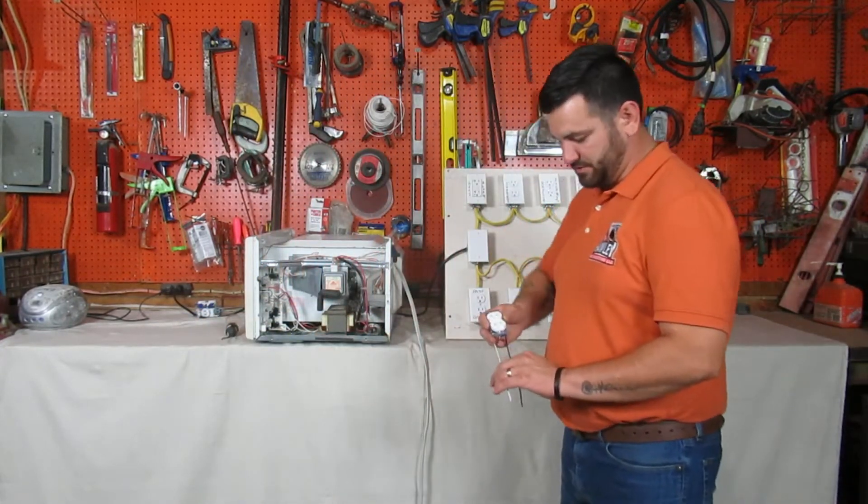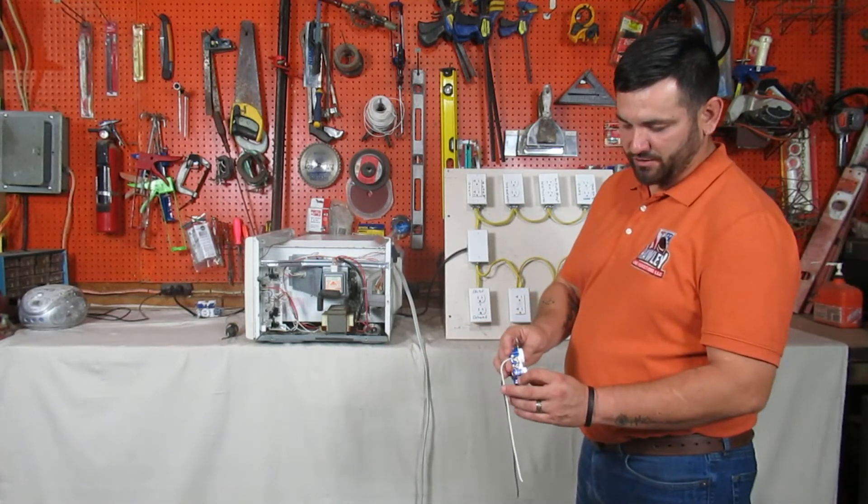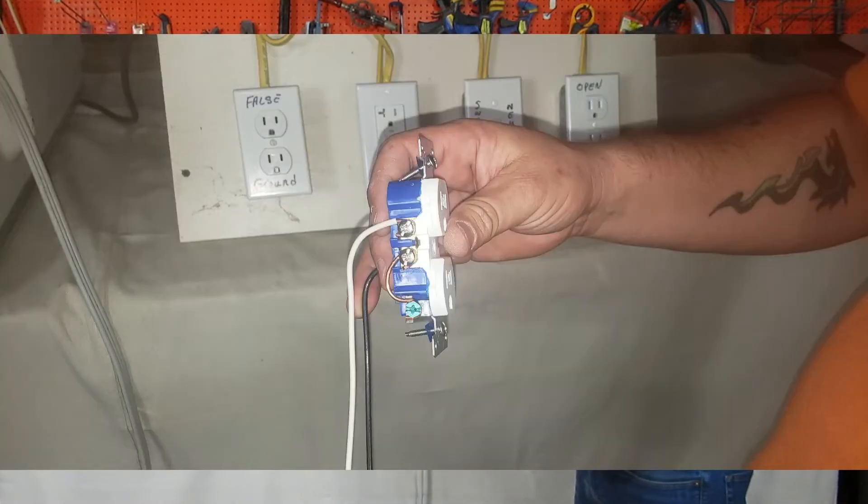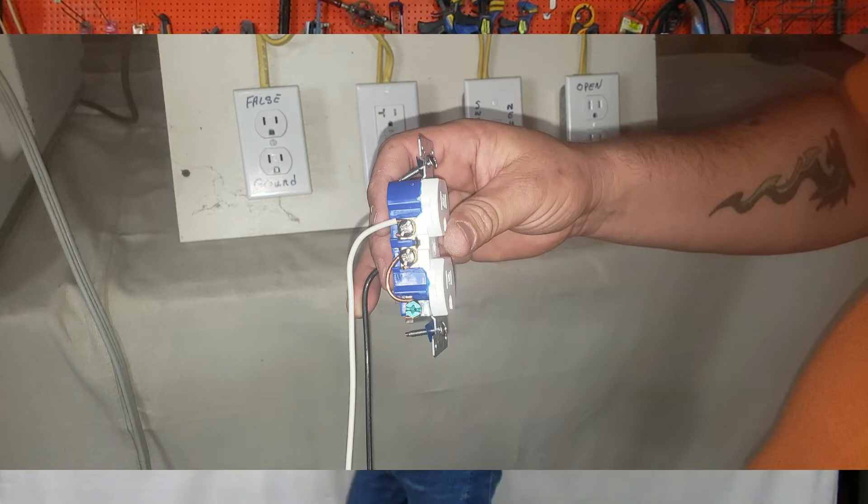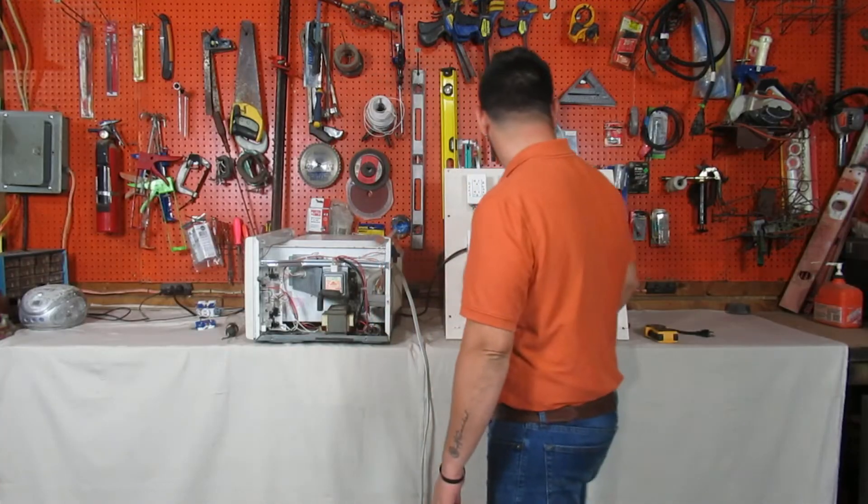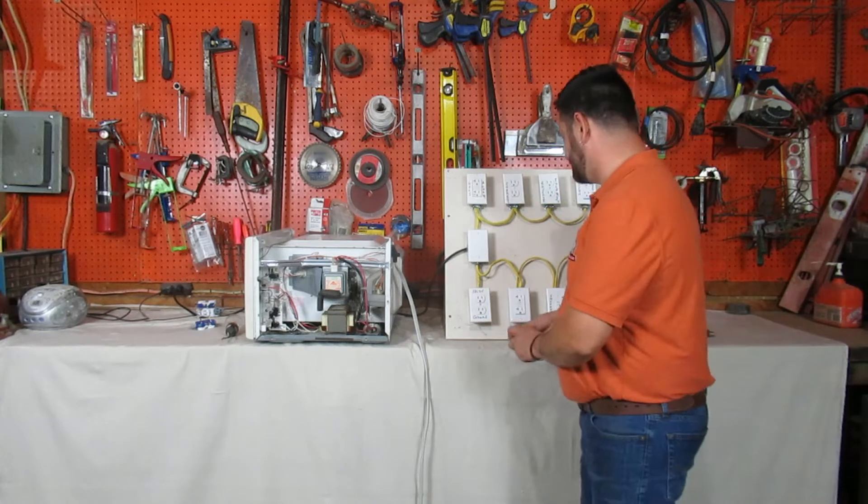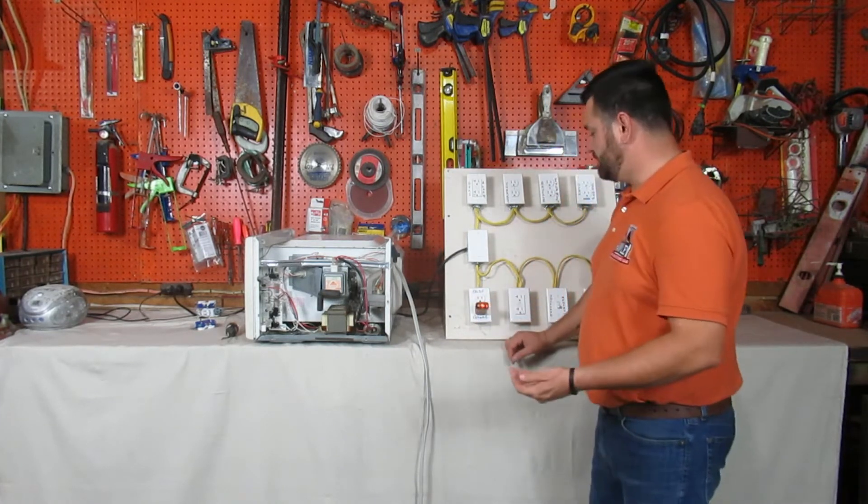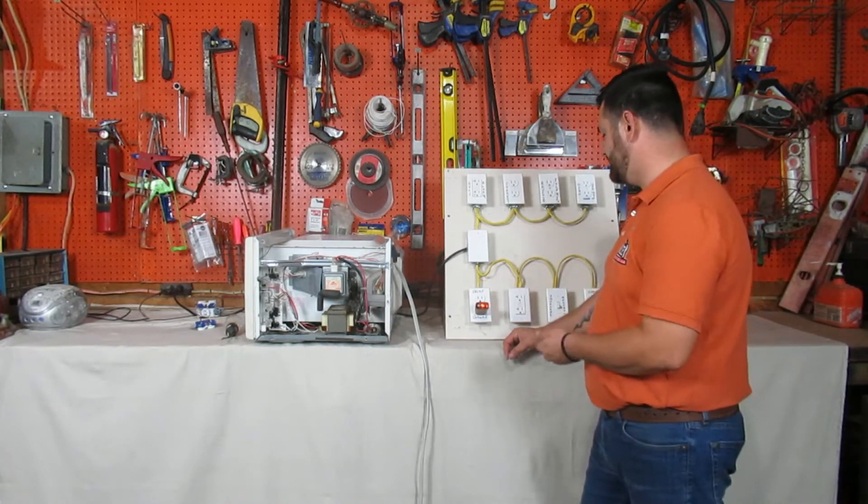So your outlet will appear to be grounded even though it's actually not. You will have no way of knowing this if you use a three-light tester here because it shows that it's grounded.